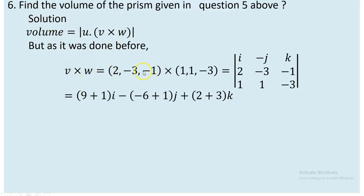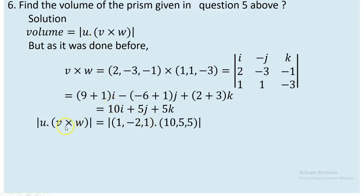V cross W is already computed as 10i + 5j + 5k. The components of U are (1, -2, 1). Taking the dot product U·(V×W): 1×10 = 10, (-2)×5 = -10, and 1×5 = 5. Summing these gives 5. Taking the absolute value, the volume of the prism is 5 cubic units. This means the amount of matter that can be contained within the prism is 5 unit³.